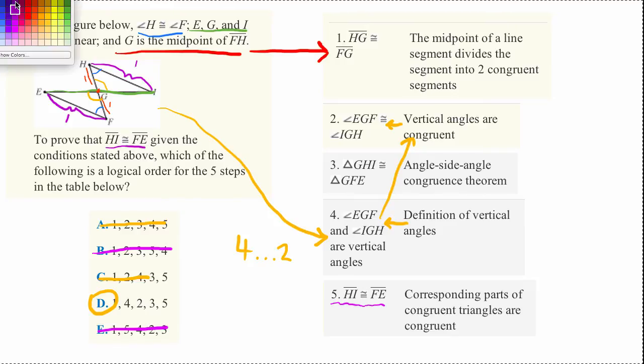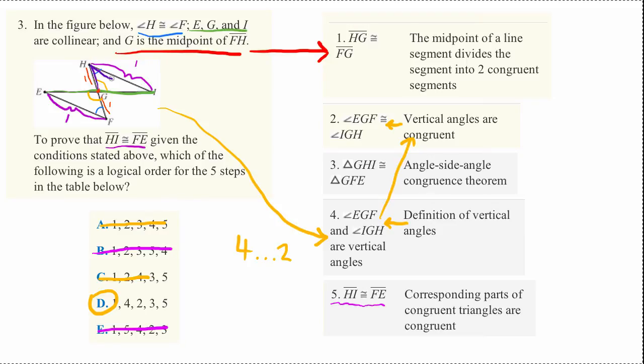Prompt three says that now triangle GHI. Let's go ahead and highlight this. Triangle from G to H to I and back again is the exact same triangle as triangle G to F to E. And back again.